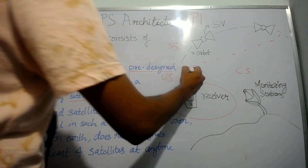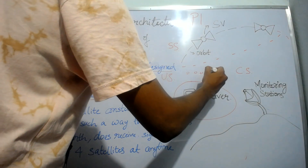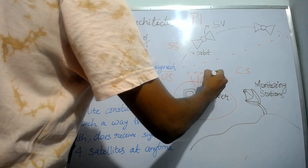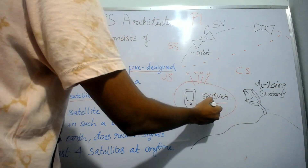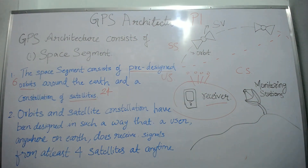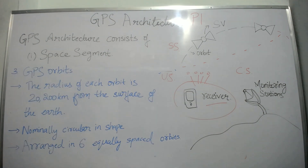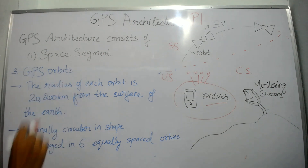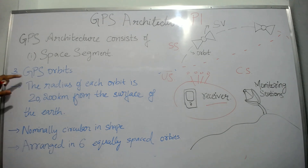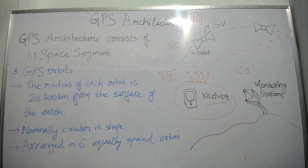That means there should be at least four satellites to give the accurate location of the receiver. You can take a screenshot. I'll erase the board and move to the third point. The space segment consists of GPS orbits and constellation of satellites, so I'll talk about GPS orbits in the third point and about the constellation of satellites in the fourth point.